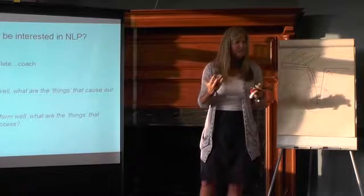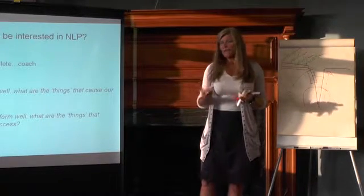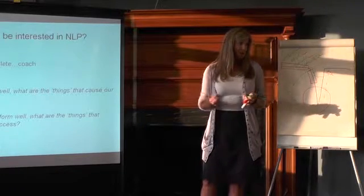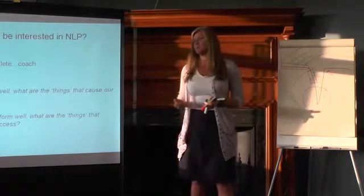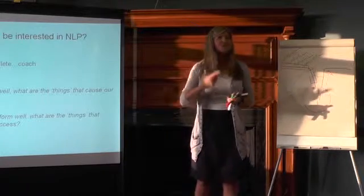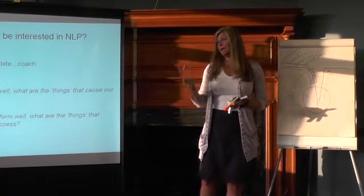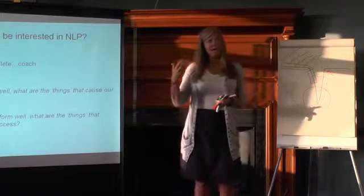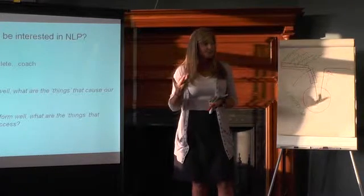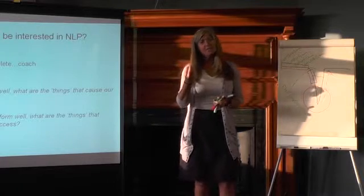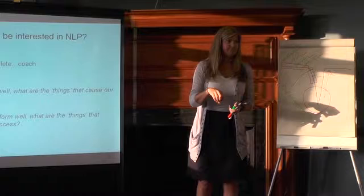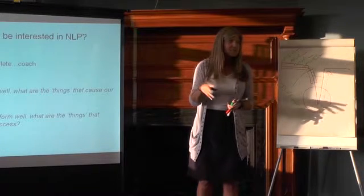We can only think roughly between seven plus or minus two bits of information at any one time, so anywhere between five and nine bits of information. This comes from research in the 60s by a guy called Miller. And he basically looked at how much can we retain in our conscious mind. Because the conscious mind is simply what we are consciously aware of now. Anything else is in your unconscious.